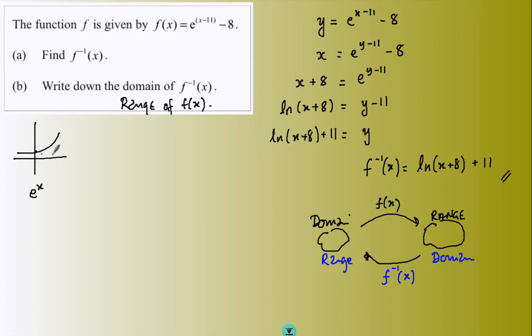First of all, graph of e to the power x looks like that. If I then do e to the power x minus 11, this is a translation. This moves it along 11 horizontally.